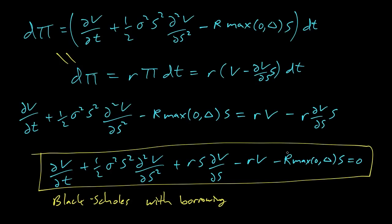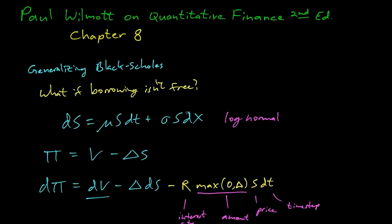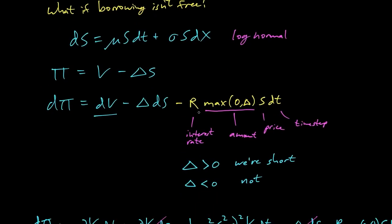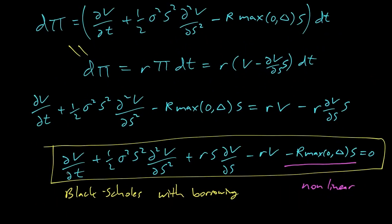One interesting thing about this equation is that the new term — r max(0, delta) S — makes it nonlinear. That means this is a nonlinear stochastic differential equation. Solving it analytically might be hard, but we can solve it numerically. This is our first example of generalizing Black-Scholes: borrowing stock costs an interest rate. We added a term to d-pi, went through the same derivation, and got a nonlinear equation. Neat stuff.